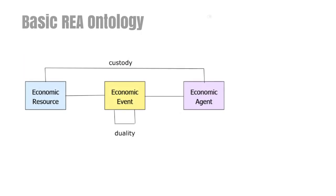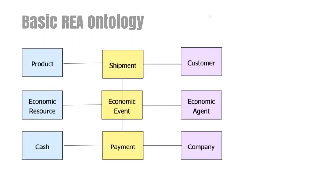We can now introduce and relate the basic concepts in REA in an ontology. There are economic resources that are controlled by economic agents. There are economic events in which agents exchange resources. And finally, there are duality relationships that associate economic events. This figure illustrates how the previous example can be viewed through the REA ontology. There are two economic agents, a customer and a company. These agents participate in two economic events, a payment and a shipment, which are related to each other by a duality relationship. And these economic events relate to economic resources — the payment to cash, and the shipment to a product.